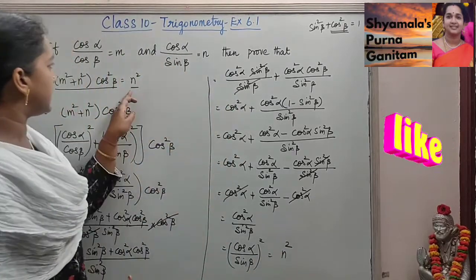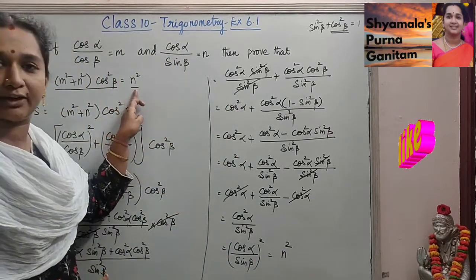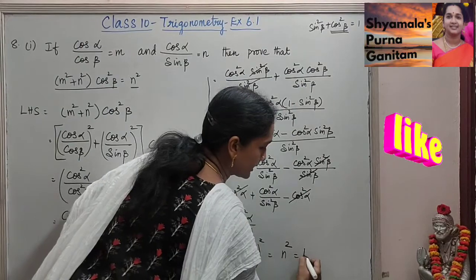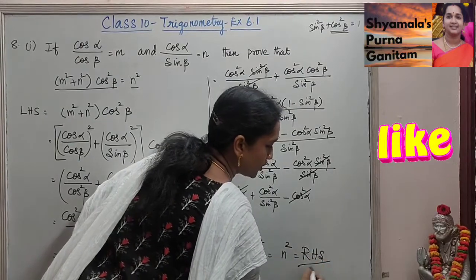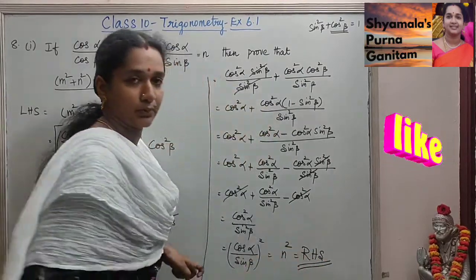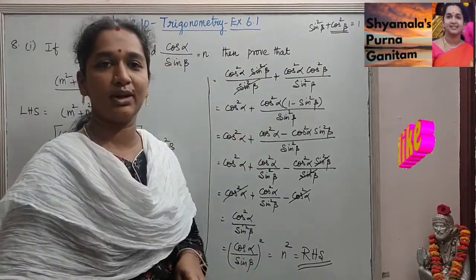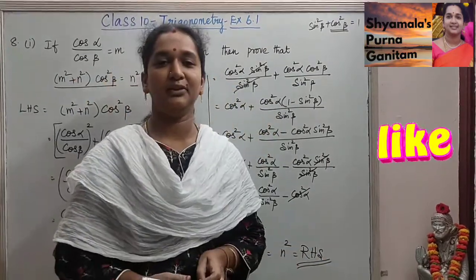So n squared is what we needed to prove as the RHS part. Hence proved. Thank you.